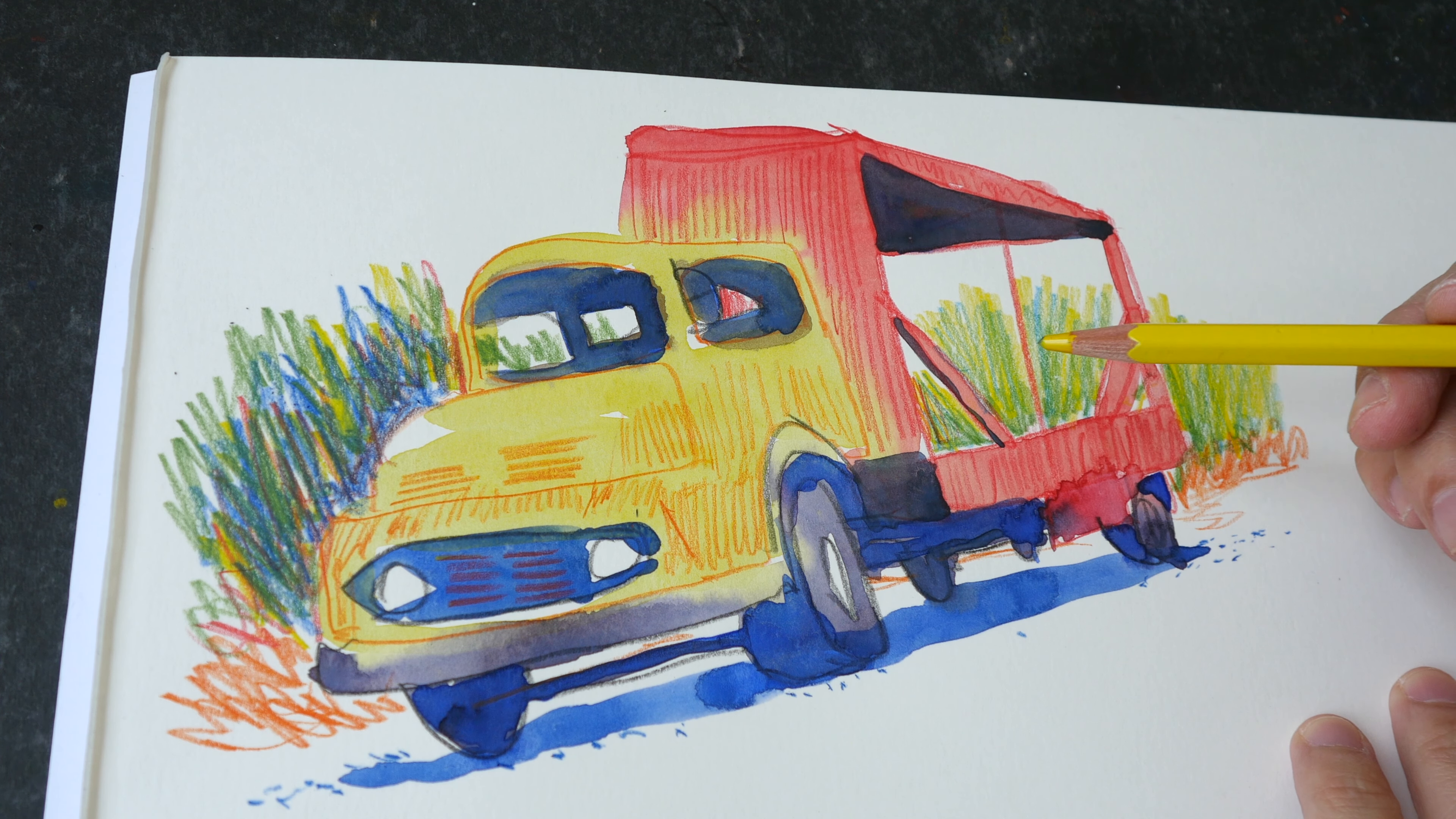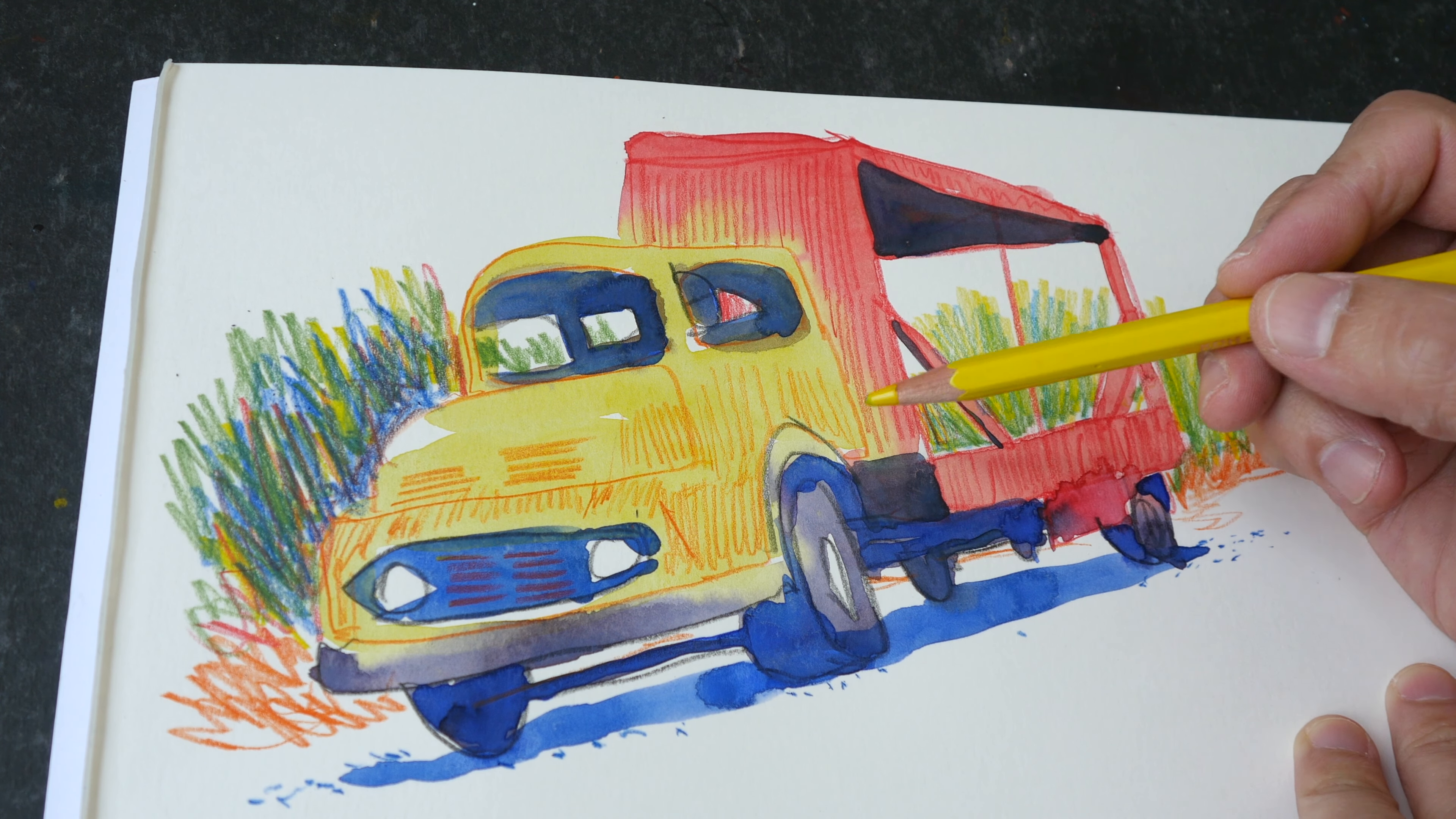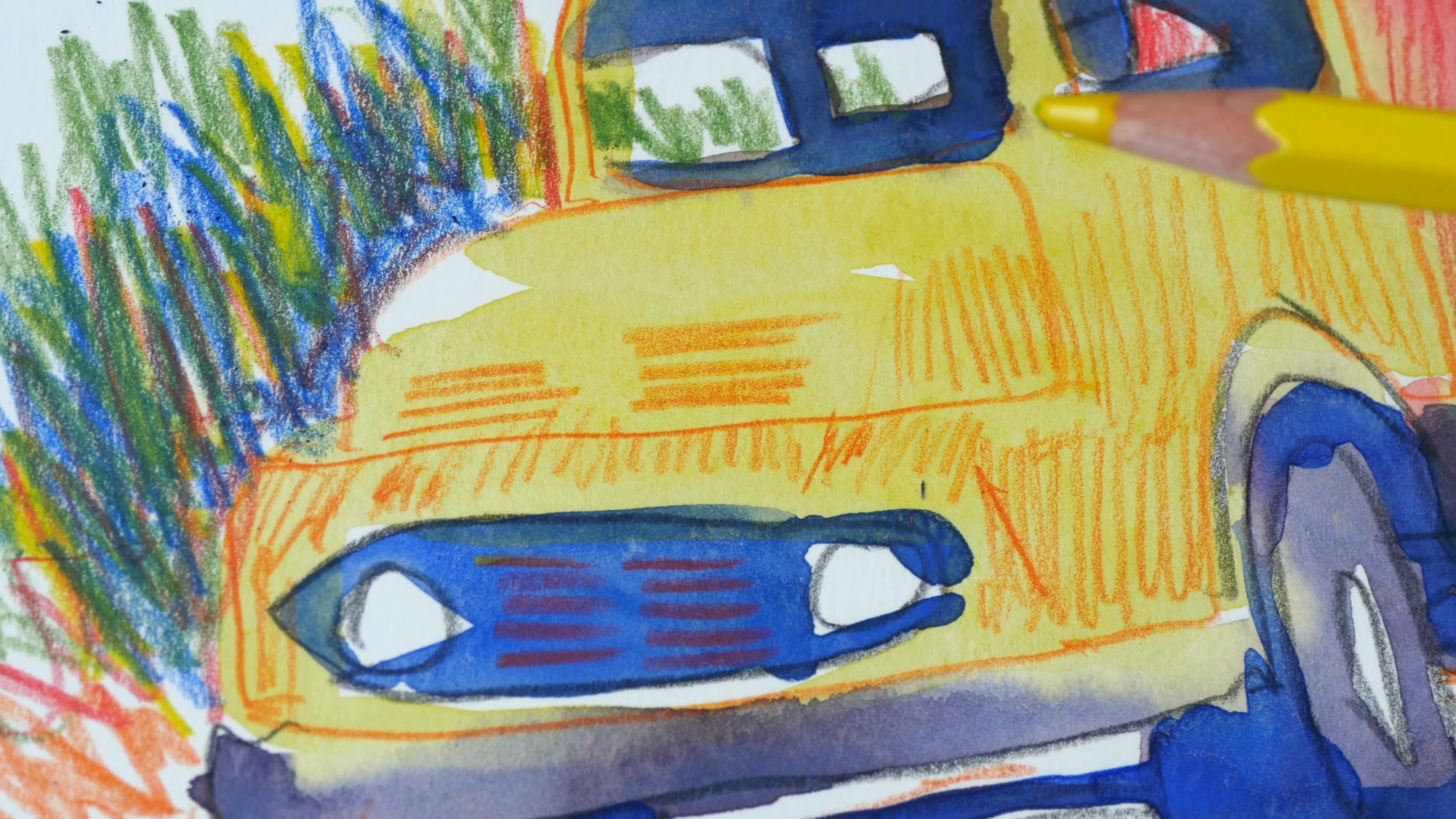This combination of colored pencil and watercolor works really well. You can use colored pencil first and apply watercolor or you can apply colored pencil over the watercolor. It looks good either way. This is hot pressed watercolor paper, by the way. It has a very smooth surface that works really well with colored pencils.